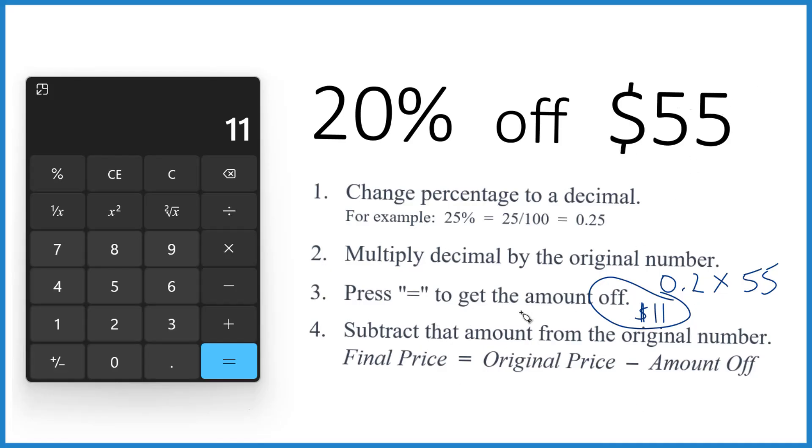If you want to know the final price, you take the original, that's the $55 there. Subtract the amount you got off, that's the $11. And 55 minus 11 is $44.